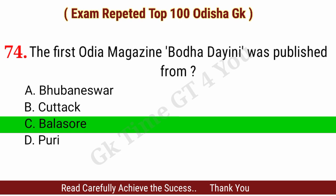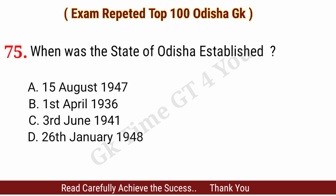Question number seventy-five: When was the state of Odisha established? Right answer, option B: 1st April 1936.